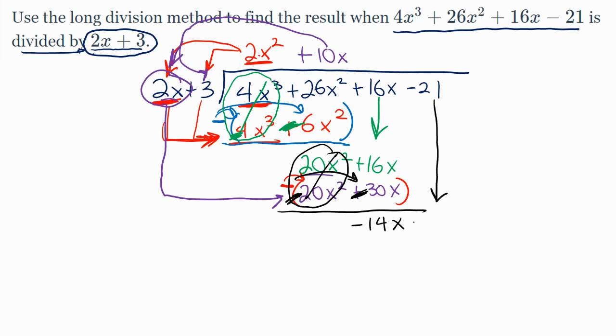And to finish the problem, we bring down our negative 21. Our last process through the algorithm, we look at the 2 and we look at the negative 14 and we decide what I multiply a 2 by to get a negative 14, and that should give me a negative 7. We take that negative 7 and distribute it to the two terms out in front, bring the product down below.